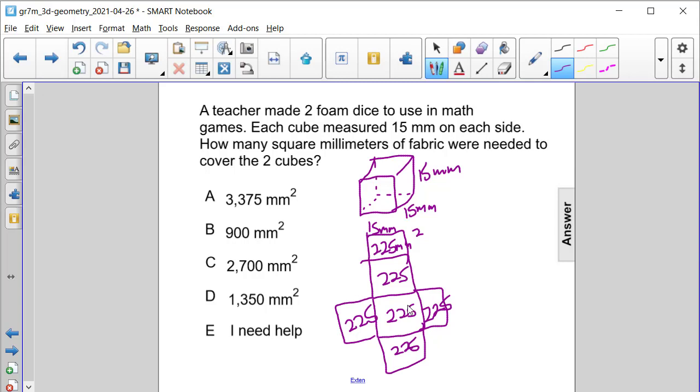And this is just for one cube. So we have another round of these. So instead of doing 225 square millimeters times 6 for one cube, we're actually going to multiply it by 12 because we have two cubes each of six faces.